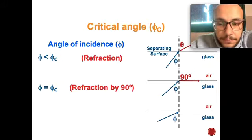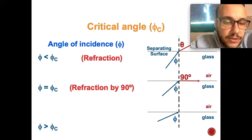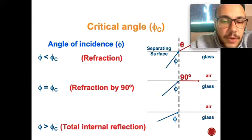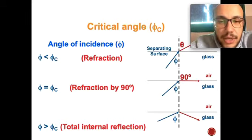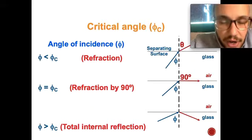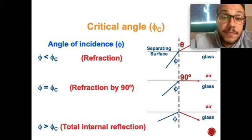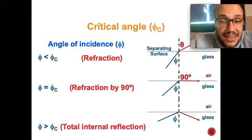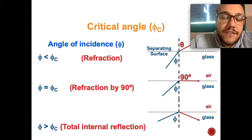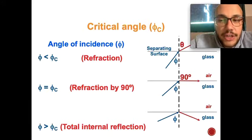If φ is greater than the critical angle, no refraction takes place; instead, total internal reflection occurs. The critical angle is a fixed value defined for every medium. Each medium has its own critical angle. If light falls at an angle less than this angle, refraction takes place. If light falls at an angle greater, total internal reflection occurs.